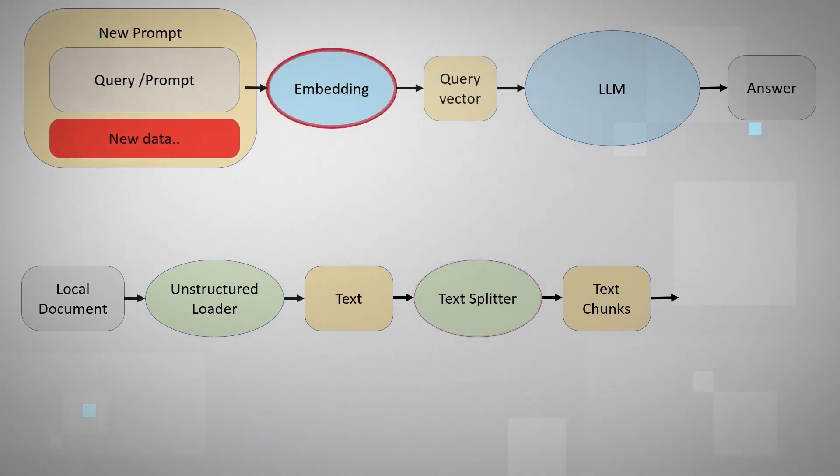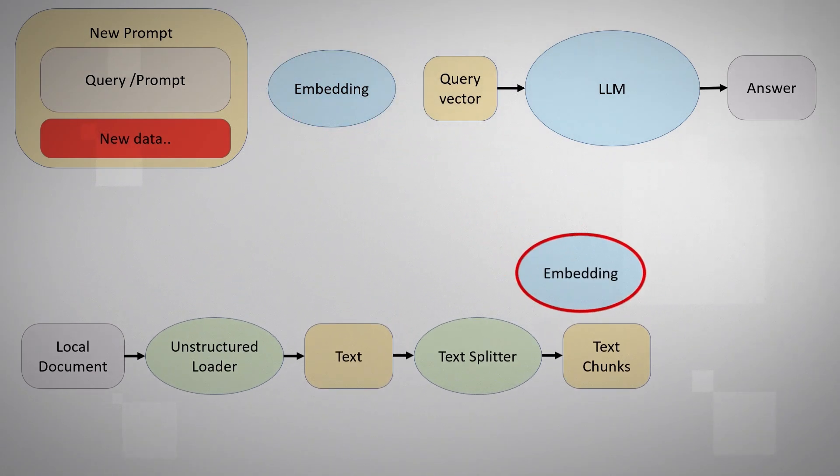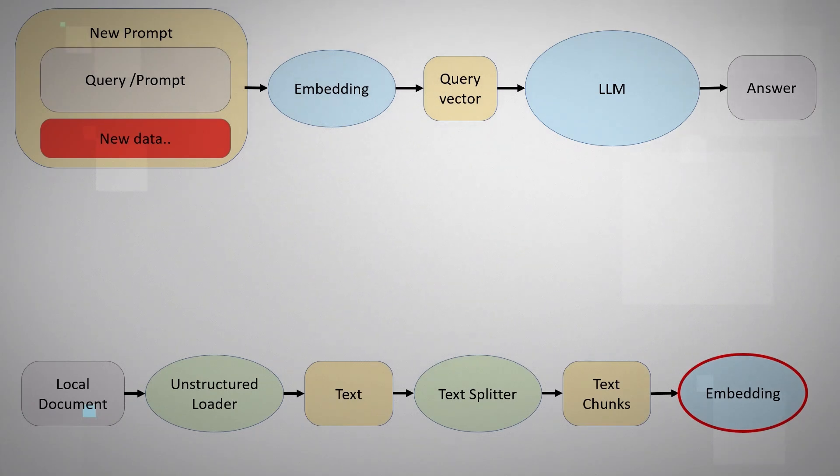Now, the truth is that we did not feed the LLM model with text. We first break the text into tokens and we convert it to embedding. Basically vectors that are inputs to the model. And we can do the same for the additional new data.